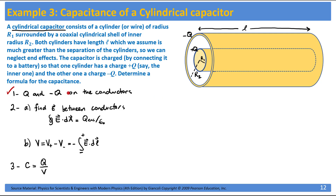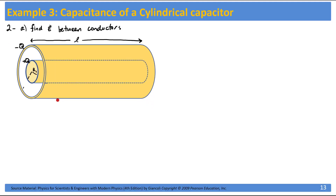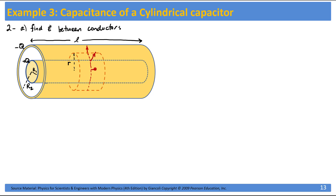We've placed charges q and minus q on the conductors. Now we need to find the electric field. Since there's cylindrical symmetry, we're going to use a Gaussian surface that is also a cylinder passing through the space between the two conductors. Let's say this Gaussian surface has radius r.